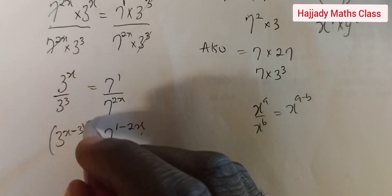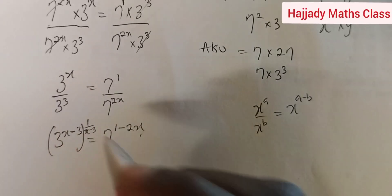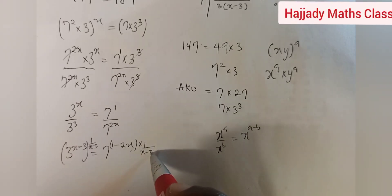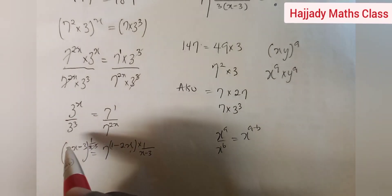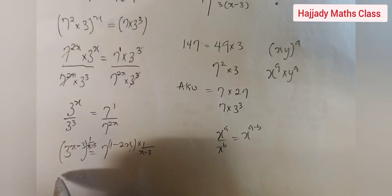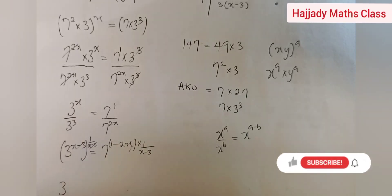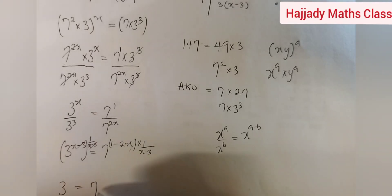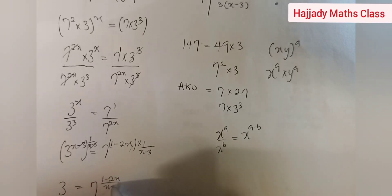In order to simplify this further, we raise both sides to the power of 1 over (x minus 3). The (x minus 3) exponent cancels out on the left, leaving us with 3 equal to 7 raised to power (1 minus 2x) over (x minus 3).